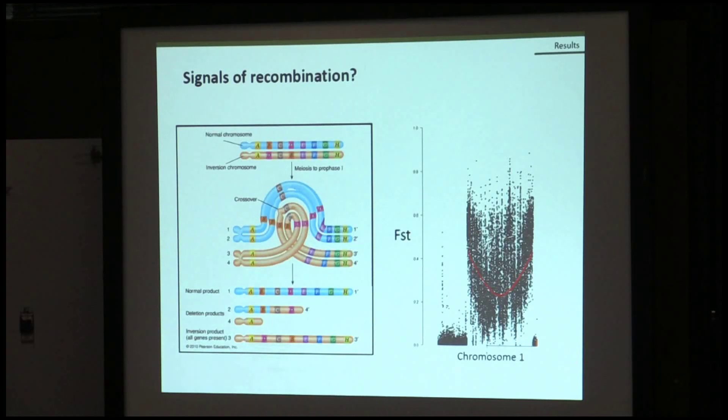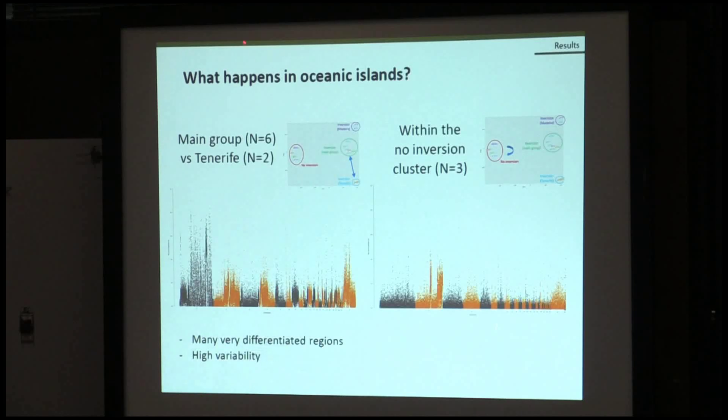After that we realized some other comparisons, like with the main group with inversion against one of those groups, in this case the cluster with samples from Tenerife. And, on chromosome 1, we see this trend that suggests that there is recombination. In this plot, there are many differentiated regions, and there is high variability, but this could be due to the fact that we have just two samples in this cluster.